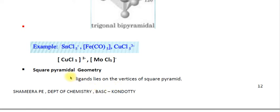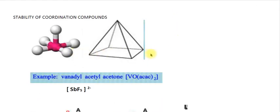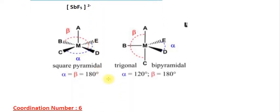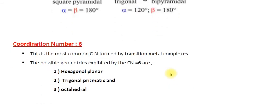The second geometry for coordination number 5 is square pyramidal, where the ligands lie on the vertices of a square pyramid. An example is [SbF₅]²⁻. In square pyramidal geometry, angles alpha and beta exist; the apical-basal angle is around 90 degrees and there is a 180-degree relationship across the base. In trigonal bipyramidal, two characteristic angles exist: 120 degrees (equatorial) and 90 degrees (axial-equatorial), with 180 degrees linearly across the axis.